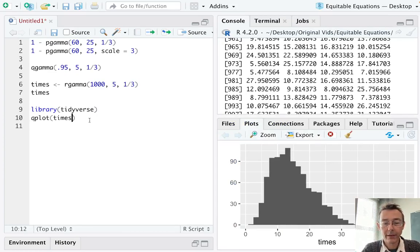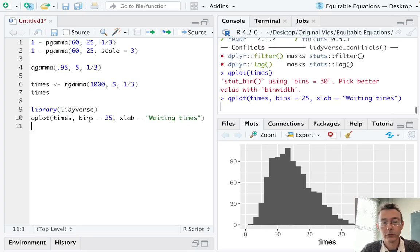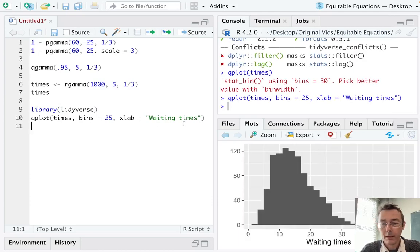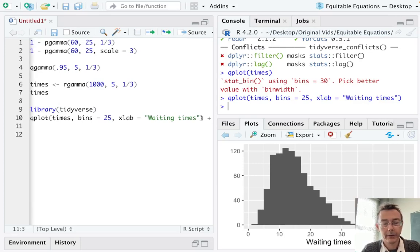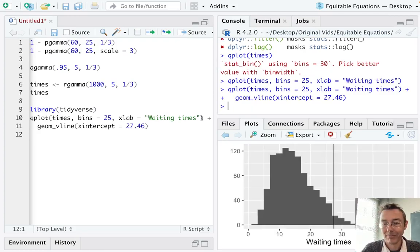We can take a second to beautify this a little bit if we want. For instance, we can change the number of bins. I don't know, let's do 25. We can change our label on the x-axis. Waiting time. Let's start with that. And let's do one other thing now. Let's also add a v-line showing that 95th percentile. So x-intercept equals, it was what, 27.46, I want to say. There we go.